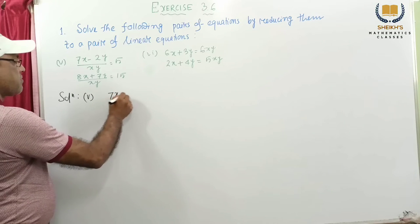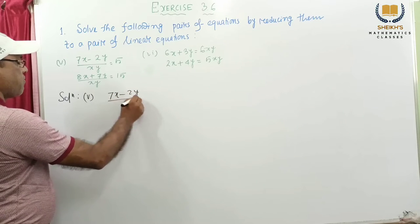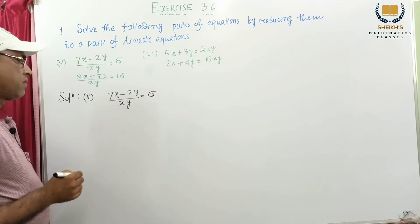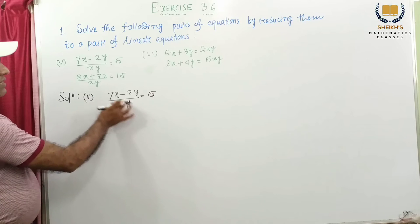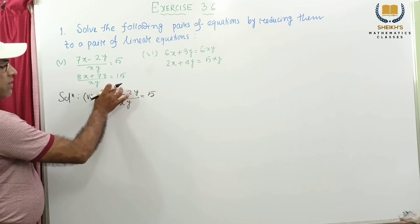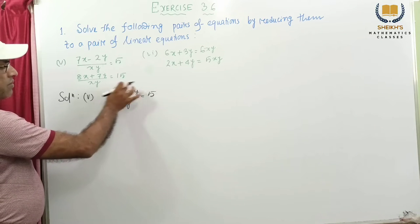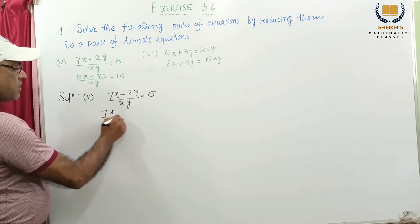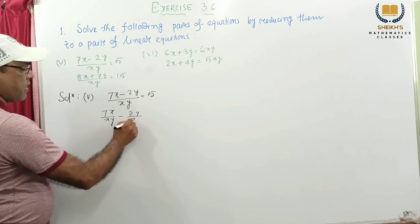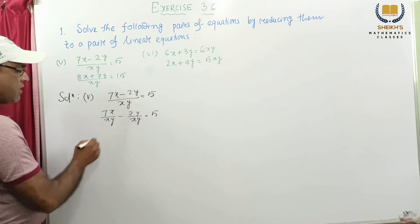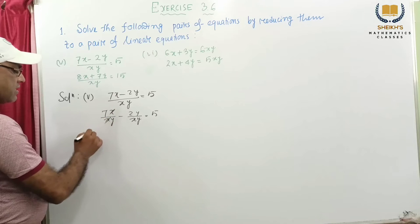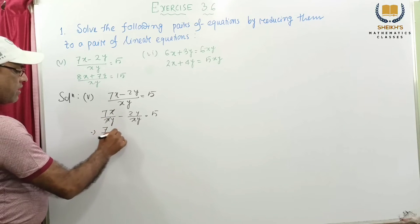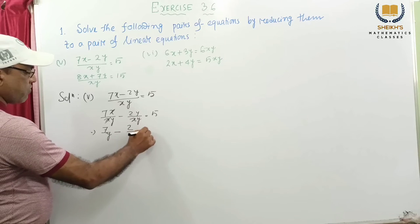First one given: 7x minus 2y by xy equal to 5. So we divide by xy, writing below 7x and below 2y. So 7x by xy minus 2y by xy equal to 5. The xx cancel, we get 7 by y minus 2 by x equal to 5. We get this one.